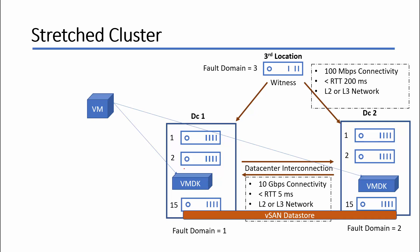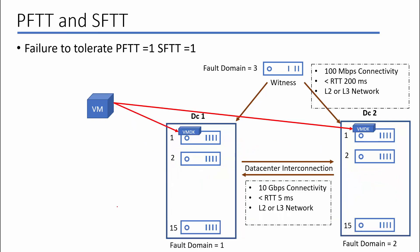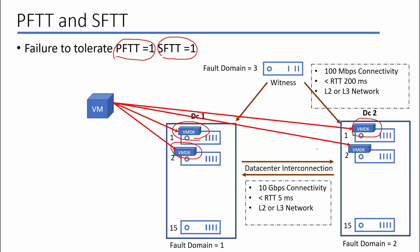A problem with this design is that if any ESXi host holding the VMDK goes down, the virtual machine will start working from the second data center. Sometimes this is not your requirement — you might prefer the virtual machine to run from another ESXi host instead of moving to data center 2. This issue can be resolved with the values Primary Failure to Tolerate (PFTT) and Secondary Failure to Tolerate (SFTT). When you set PFTT to 1, a copy of the VM VMDK is kept in data center 1 and another in data center 2. If you set SFTT to 1, an additional copy is available in the same data center, so if an ESXi host fails, the virtual machine continues working from the same data center using the available copy.